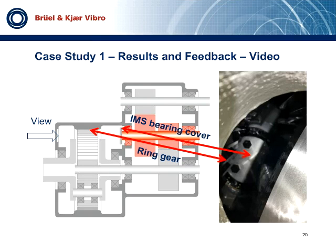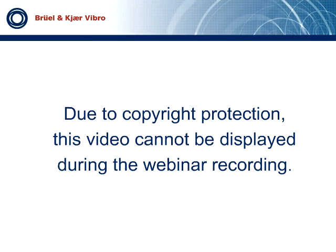Here is a video received from the inspection initiated after one of our alarm reports. The viewing position is from the planetary stage inspection cover. You can see the rotor side of the IMS. Some of you may not be able to see the video due to firewall restrictions. Essentially, the videos show visually the looseness — the movement of the shaft. This video will demonstrate the radial movement of the shaft. It is not easy to see; you have to look carefully at the IMS shaft cover area.